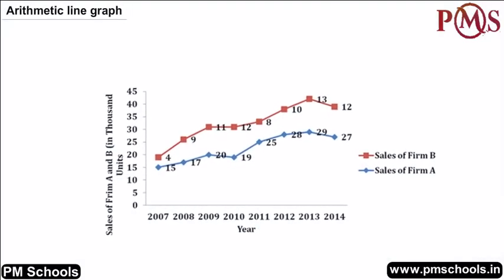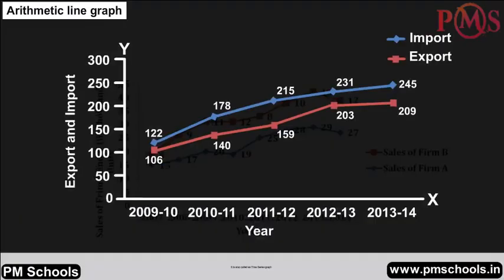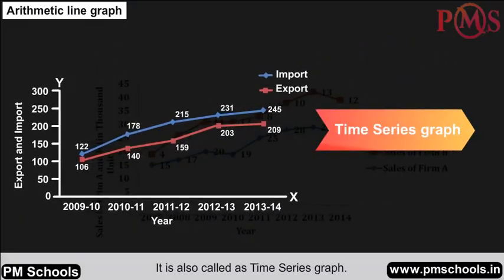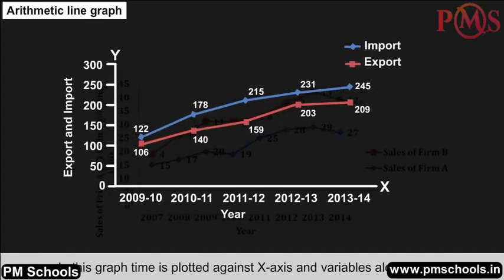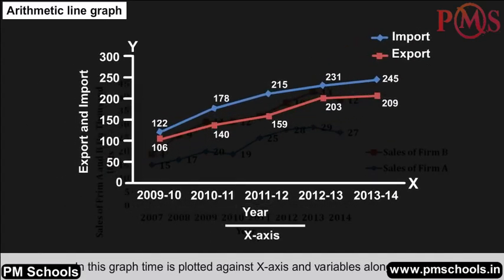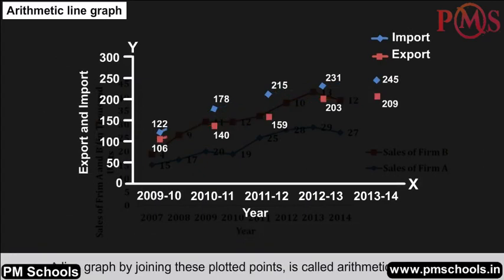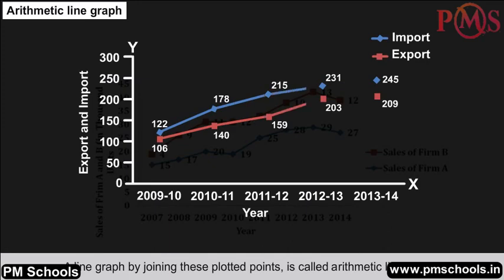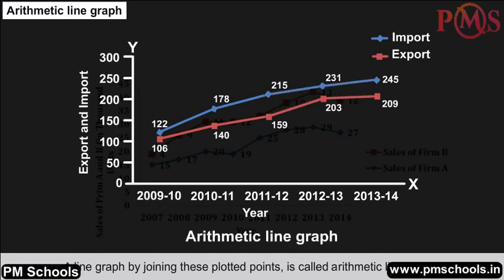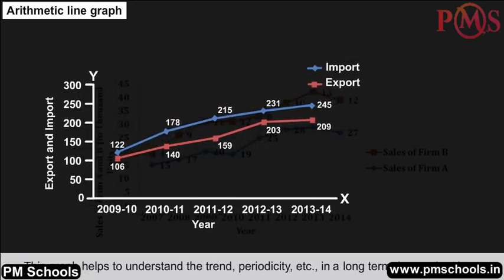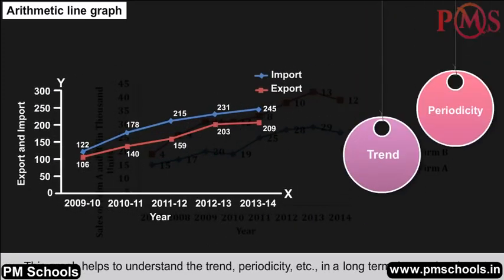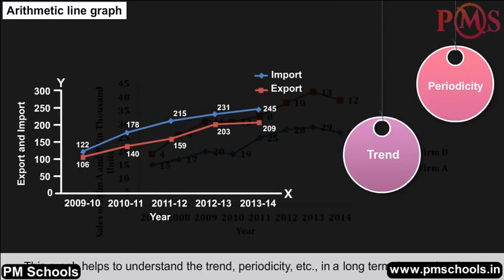Arithmetic line graph: Also called a time series graph, in this graph time is plotted along the x-axis and variables along the y-axis. A line graph formed by joining these plotted points is called an arithmetic line graph. This graph helps to understand the trend, periodicity, etc. in long-term time series data.